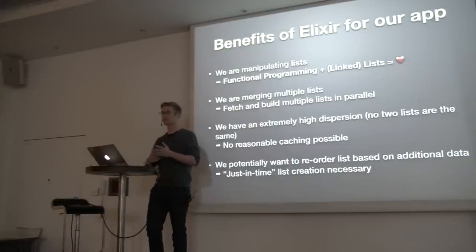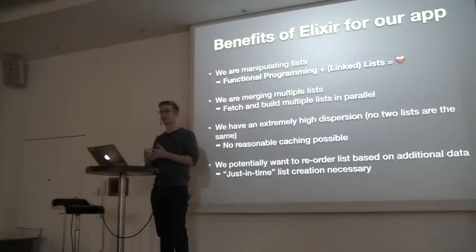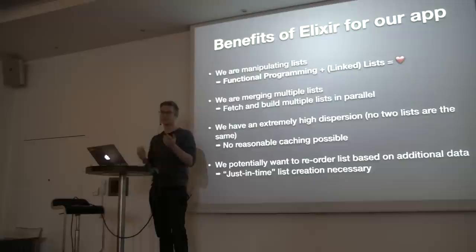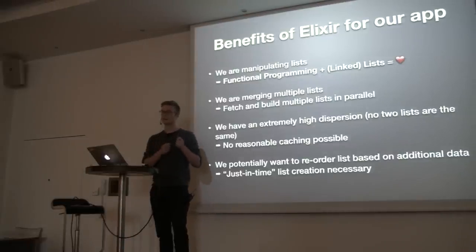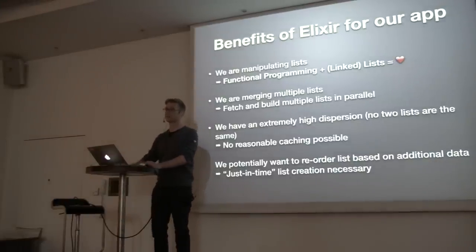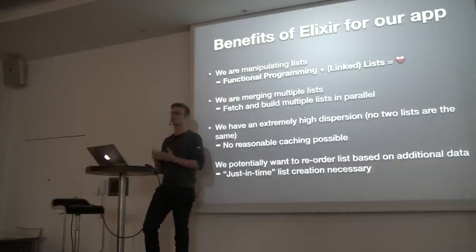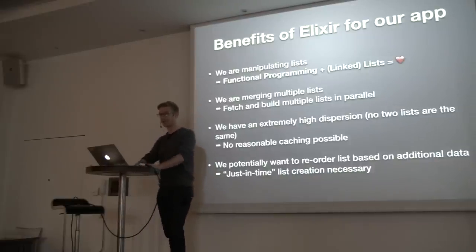Obviously there's some caching you can do in between, but if you are compiling lists that have to be very fresh and individualized on a per-user basis for over 80 million users, you can't preemptively compute all the different list combinations and cache them. Well, you possibly can, but I wouldn't recommend trying.